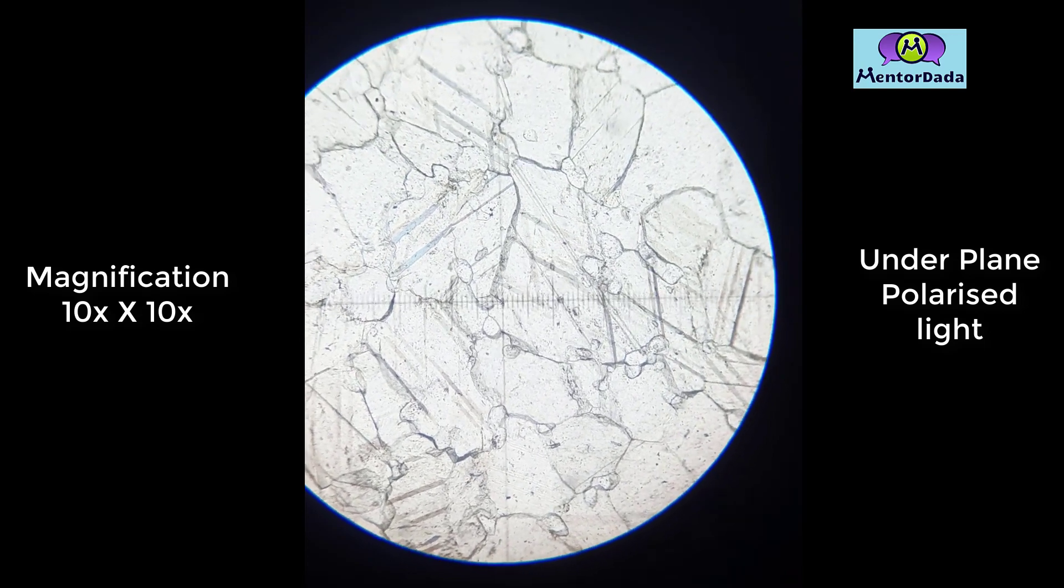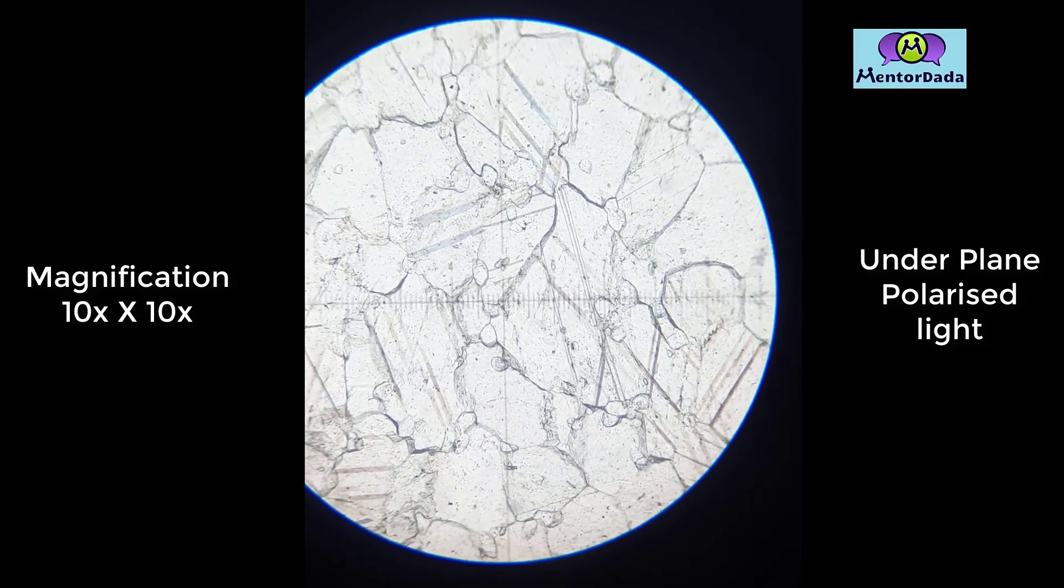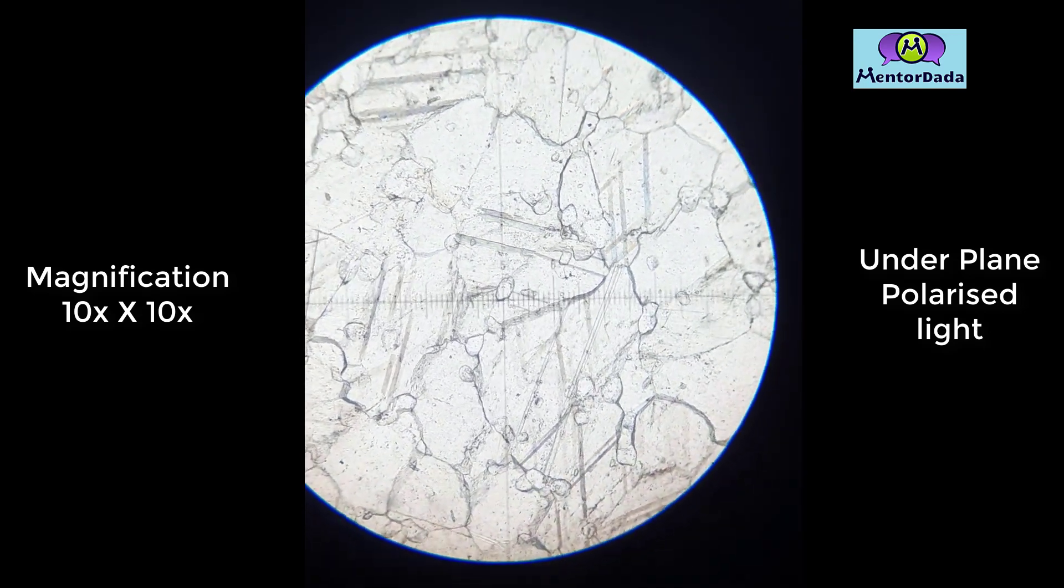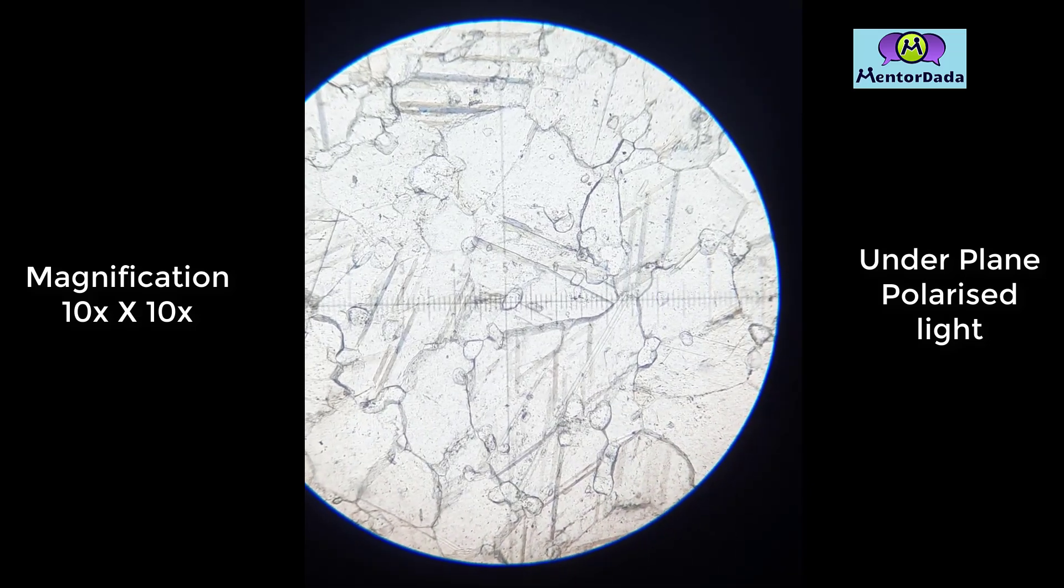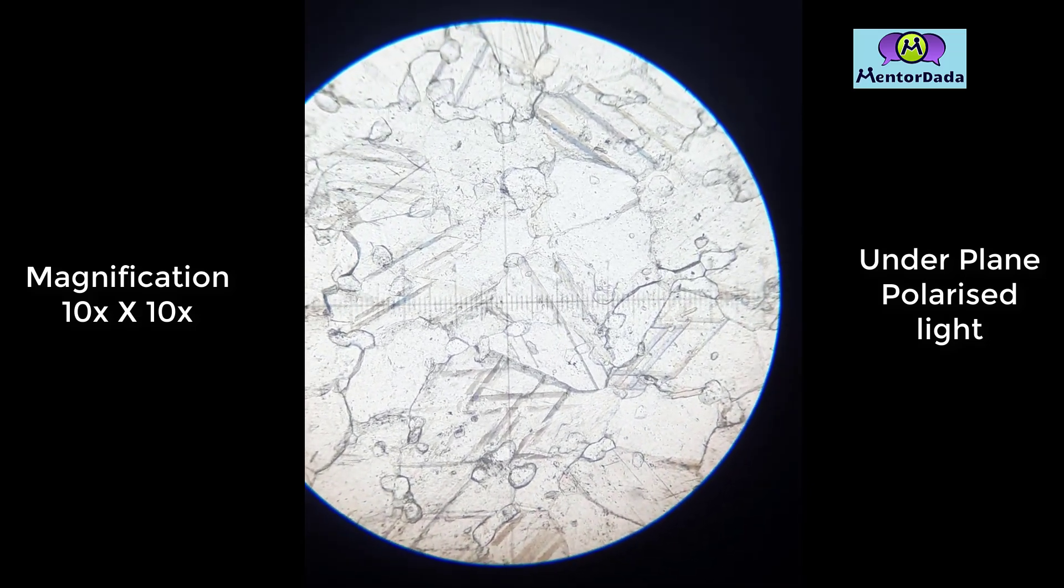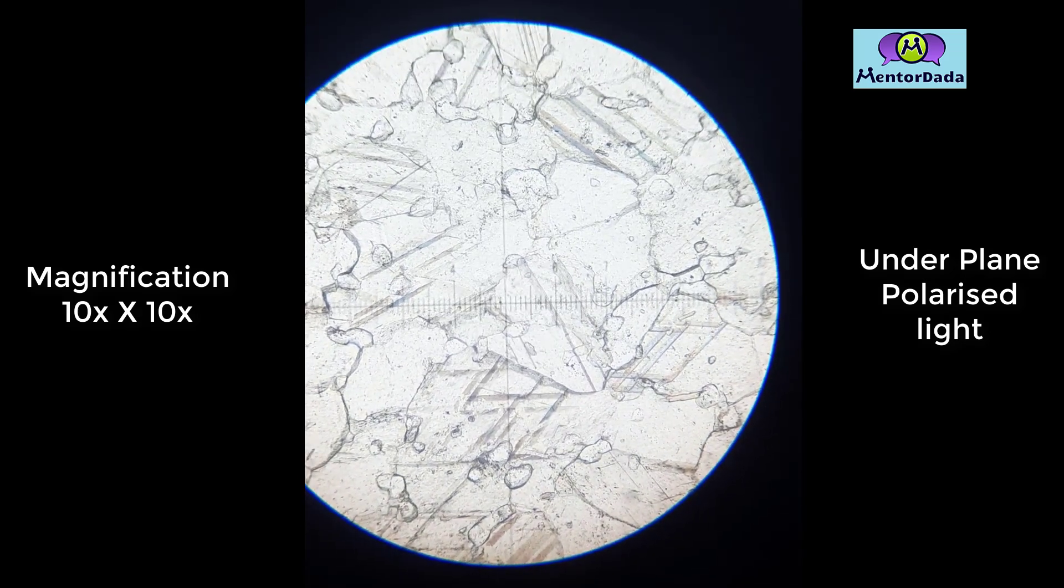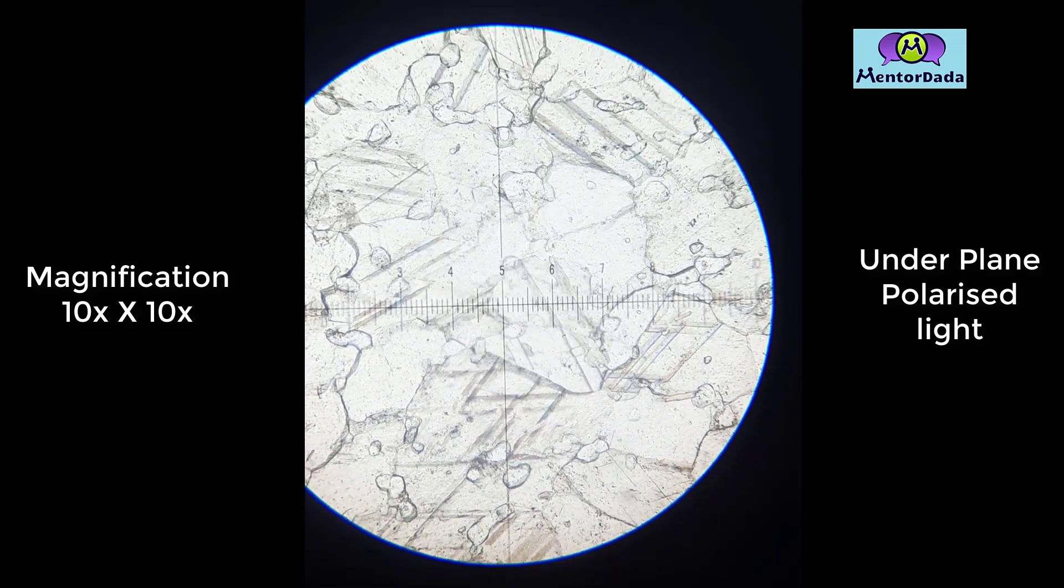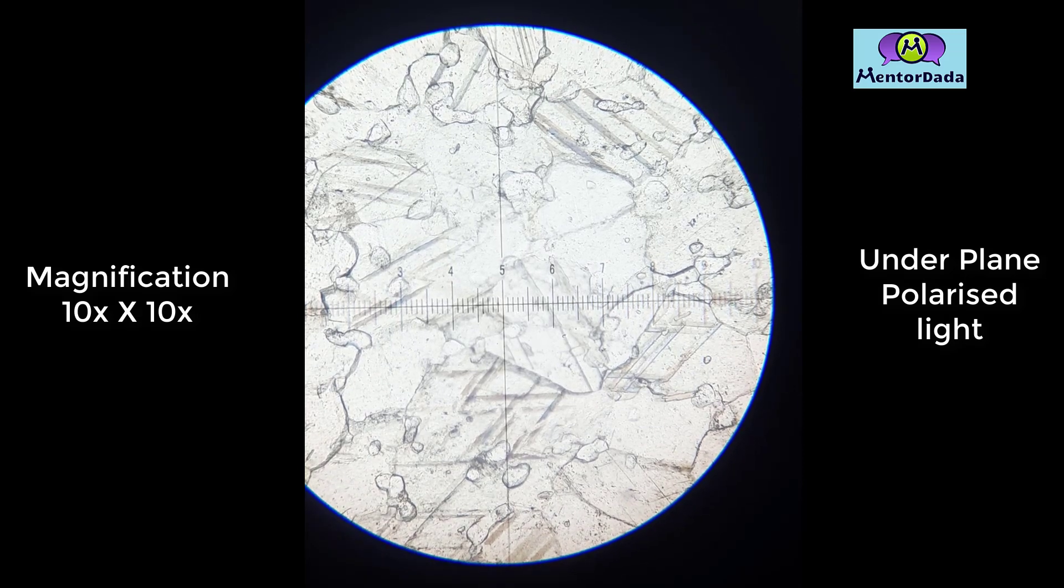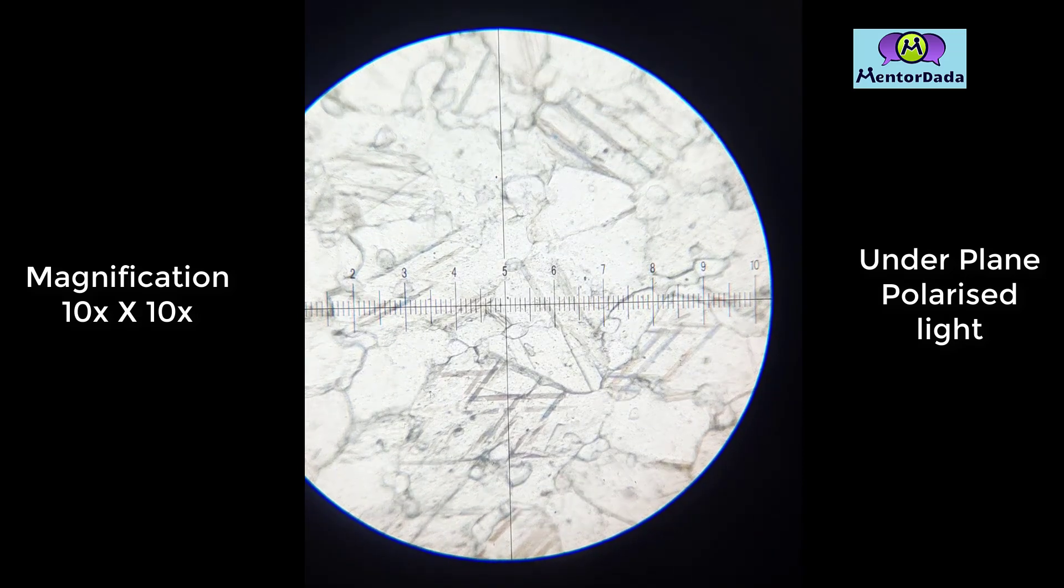Further, when we rotate the stage, the mineral changes refractive index from high RI to low RI. This change of RI is a significant property of this mineral, and this effect is called the twinkling effect. It is also a diagnostic property of this particular mineral.